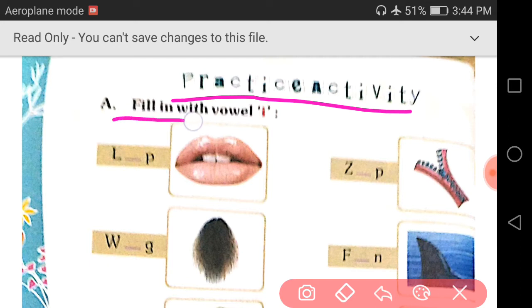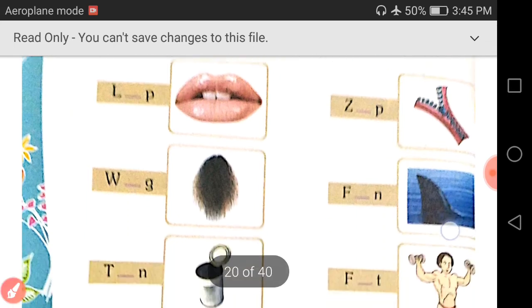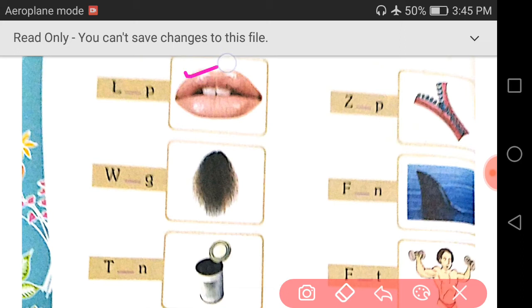Part A: Fill in with the vowel I. We have to fill the I vowel to complete these words. Look at the image, what is it? Lips. L-I-P, lip. Write down I. L-I-P, lip.